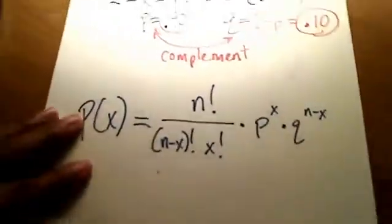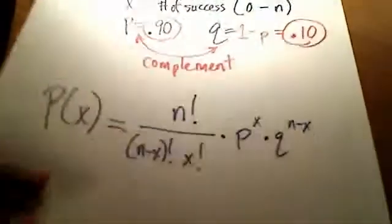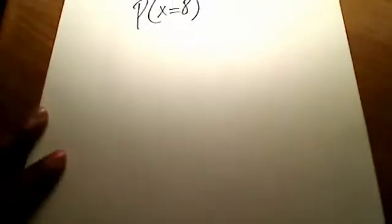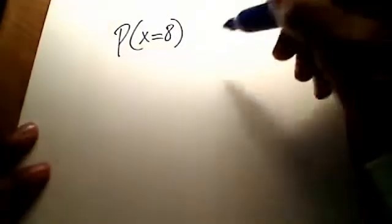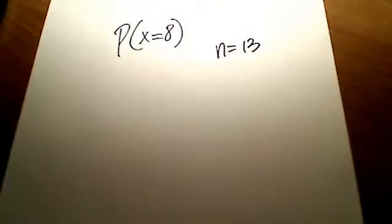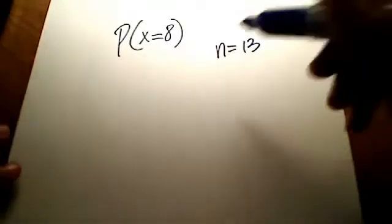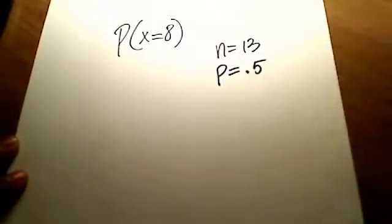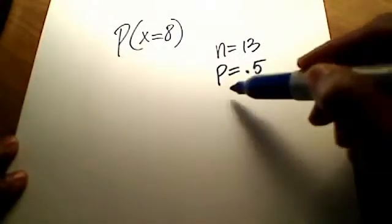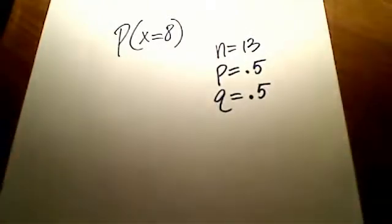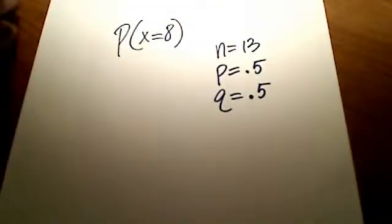So let me work out an example. Let's say that I am looking for the probability that x is equal to 8, given that n is equal to 13. So I'm going to repeat this trial 13 times, and the probability of success is 0.5. As soon as you see that 0.5, you automatically know that q is also 0.5, because these two things are complements of each other.